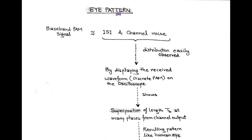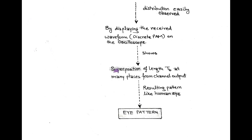Welcome once again. In this session, we are going to discuss the Eye Pattern. In the baseband PAM signal, inter-symbol interference and channel noise are the major problems, and they can be minimized using a raised cosine roll-off filter, which we discussed in our last video lecture. The distribution of inter-symbol interference can be easily observed by displaying the received waveform — that is, a discrete PAM signal — on an oscilloscope. Based on observation, there is a display of a pattern after superposition of every length TB (bit duration) across the channel output, and this pattern looks like a human eye, hence called the eye pattern.